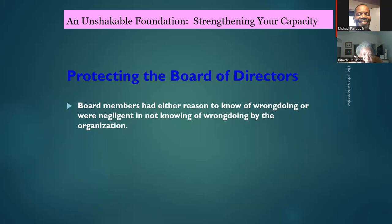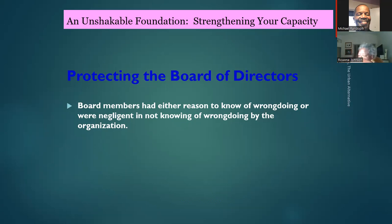Board members had either reason to know of wrongdoing or were negligent in not knowing of wrongdoing by the organization. Board members that knew or should have known are still responsible. For example, if an employee drops water on the floor, puts up no wet-floor sign, a client slips and falls, and the board knew staff never put up warnings — you can be sued because you knew or should have known you were putting someone's life in jeopardy.